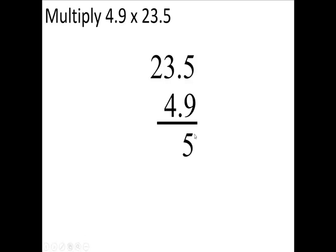5 times 9, 45, carry the 4. 3 times 9 is 27, plus 4, 31. Write the 1 down, carry the 3. 2 times 9 is 18. 18 plus 3 is 21. Erase that 3.